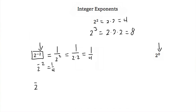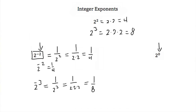If we had 2 to the negative third, that's the same as 1 over 2 to the third, and that would be equal to 1 over 2 times 2 times 2, or 1 eighth. So whenever you have a negative exponent, that just means that that whole term goes in the denominator.